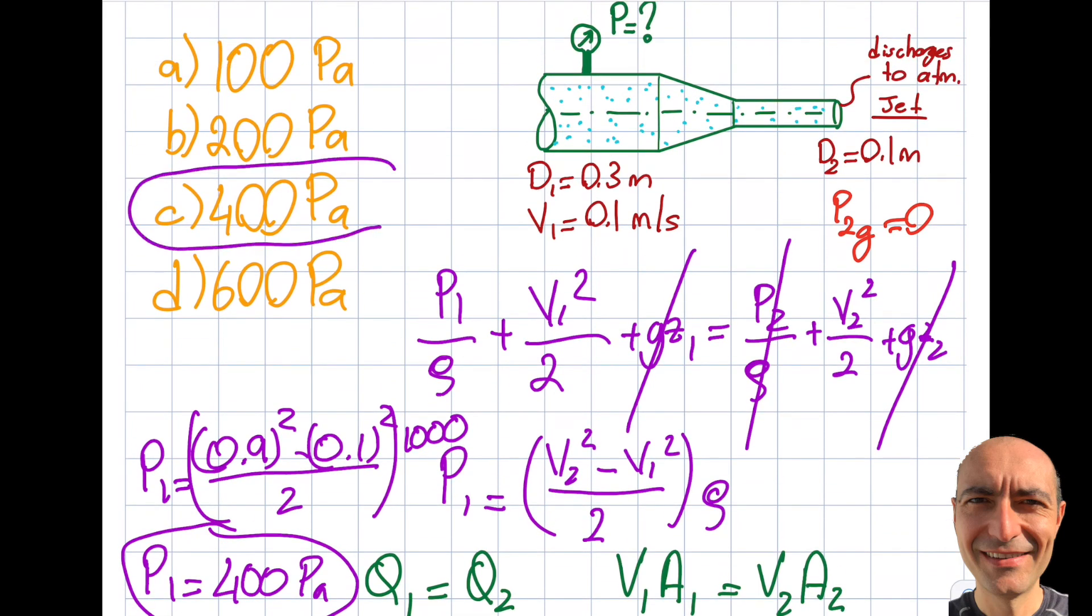Note that if the question asks what this pressure is in absolute terms, you need to add 101,325 to it. It'll be around 102 kilopascals if the question is testing you on the absolute value. Thank you for watching.